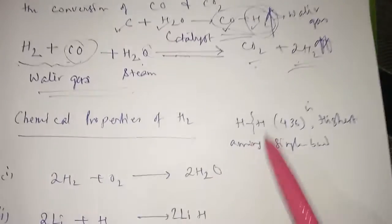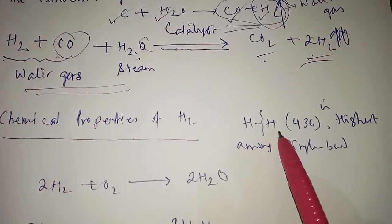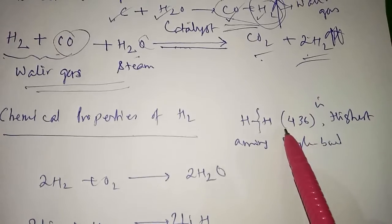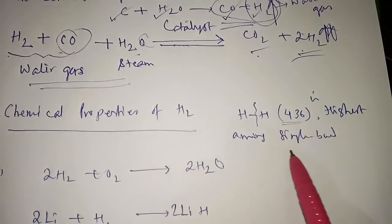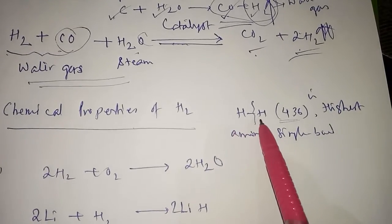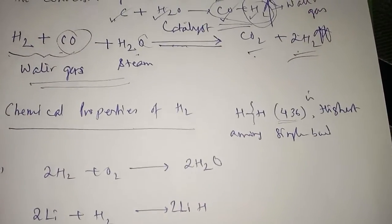The single bond between hydrogen atoms requires high amount of energy to break down. It is 436 kilojoule per mole, the highest among single bonds because hydrogen size is small. So generally hydrogen reacts at higher temperature.